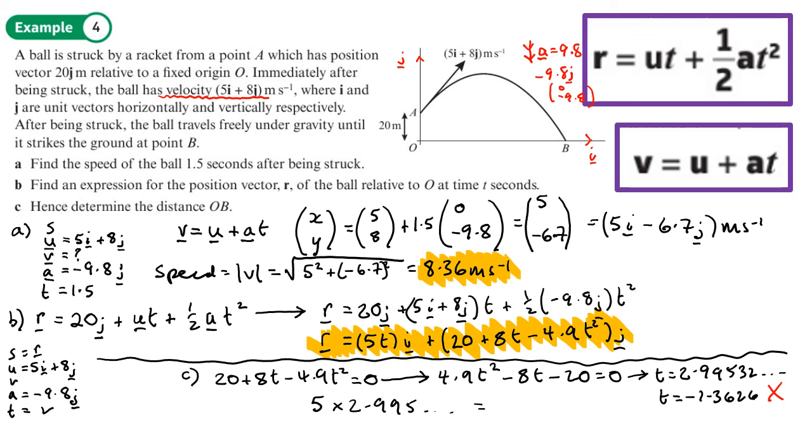Times it by 5, that gives me 14.9766. All we've done here is velocity times time to get displacement. There's no acceleration, so we can just use speed times time. 14.98 meters is the distance from O to B. You should now be able to do exercise 8B on pages 166 to 167.